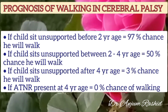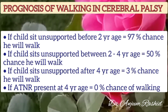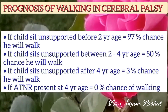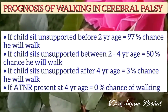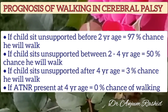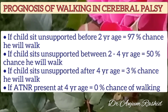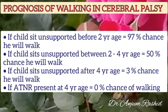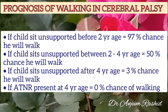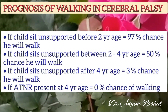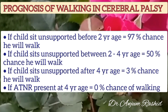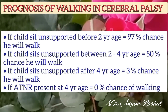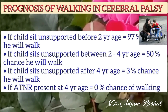If a child with cerebral palsy sits unsupported before 2 years of age, there is a 97% chance they will walk. If sitting unsupported occurs between 2 to 4 years of age, there is only a 50% chance of walking. If sitting unsupported occurs after 4 years of age, there is only a 3% chance of walking. Furthermore, if the asymmetric tonic neck reflex is present at 4 years of age, there is a 0% chance of walking.